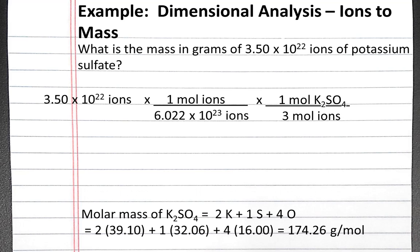To calculate the molar mass of potassium sulfate, we need to add together two moles of potassium, one mole of sulfur, and four moles of oxygen. If we put this in our calculator, we'll get 174.26 grams per mole.